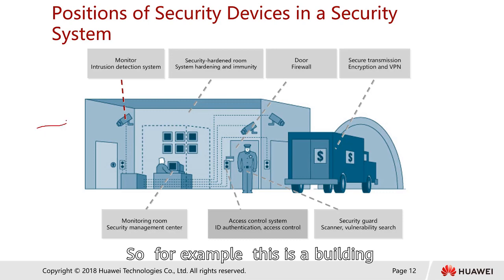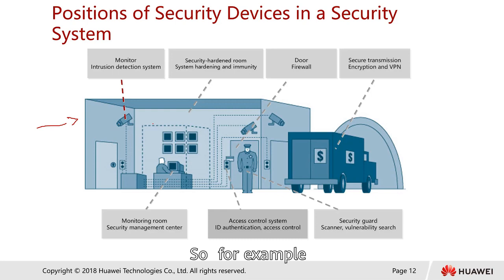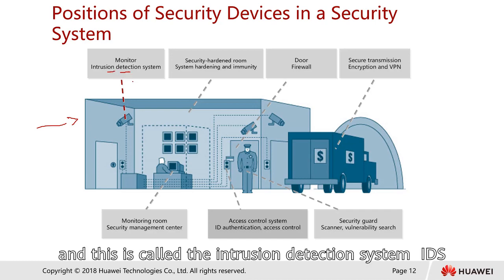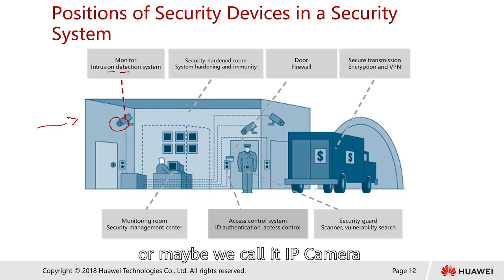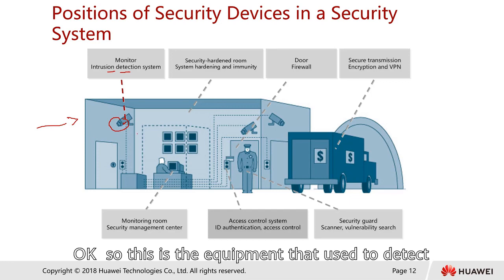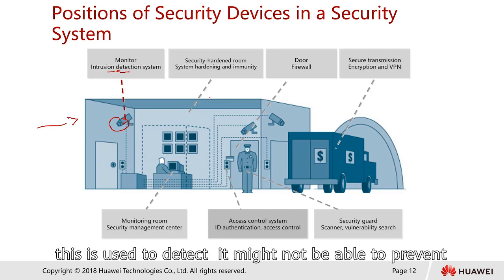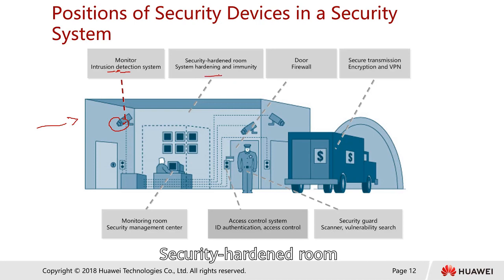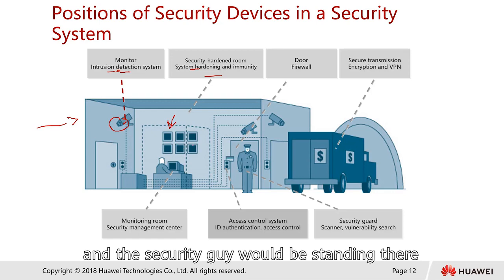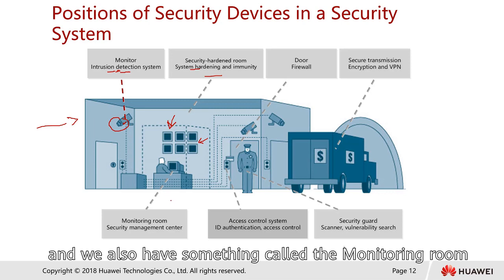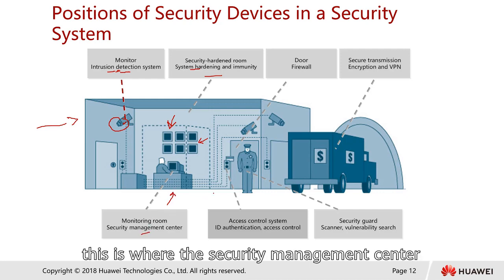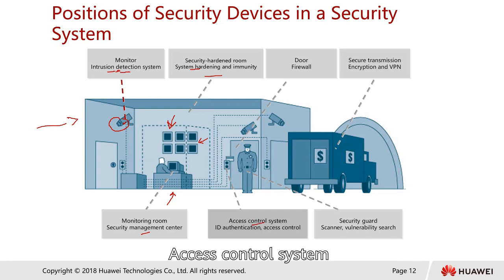In the real world, consider a building — how do we secure a building? We have someone to monitor, and this is called the Intrusion Detection System (IDS). We have a CCTV surveillance camera, also called an IP camera. This is the equipment used to detect — remember, it can detect but may not prevent. We also have a security hardened room where the security personnel sit and observe all the cameras, and a monitoring room serving as the security management center.